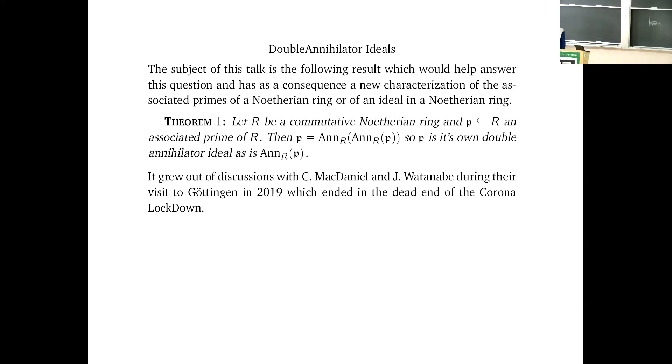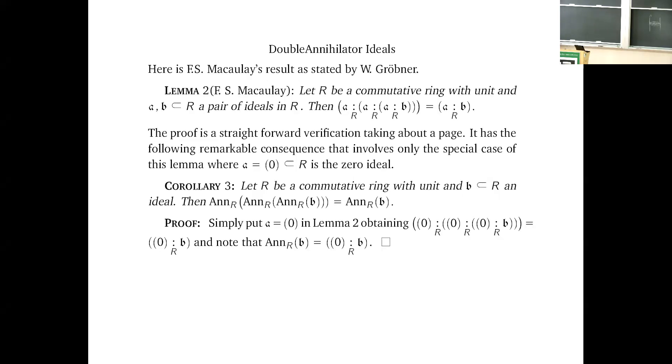So we couldn't do anything about this. I thought about this and thought about it and thought about it. And the upshot of this is that I came up with an identity due to Macaulay. So this is an identity involving two ideals in an arbitrary commutative ring with unit. Now, of course, in Macaulay's case, what he proved is this identity. But he proved it in polynomial rings, because that's what Macaulay does. He plays with polynomial rings.